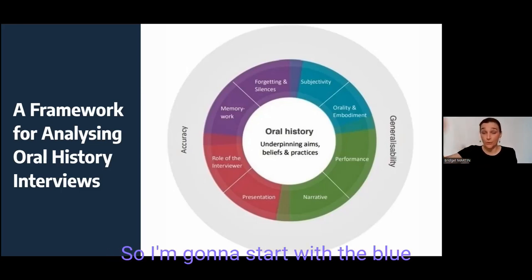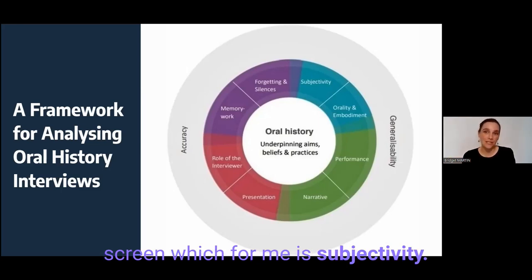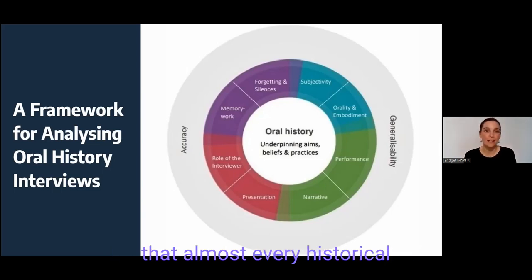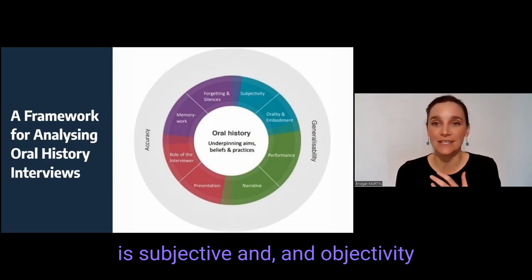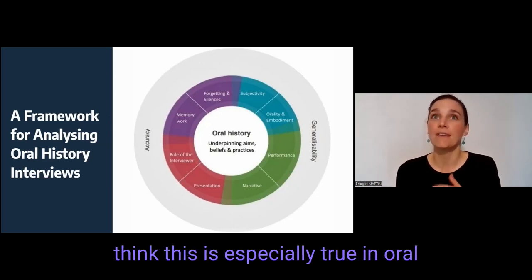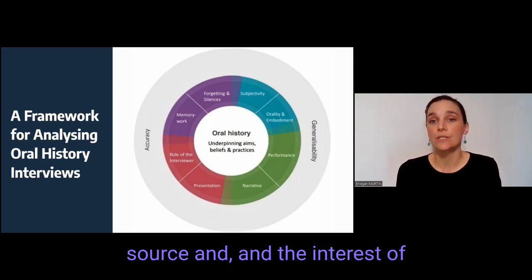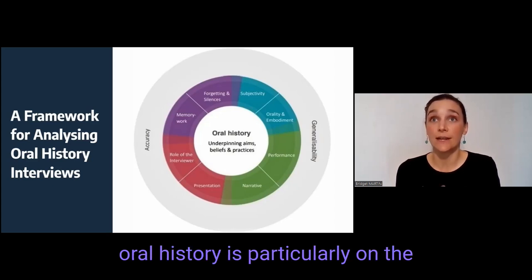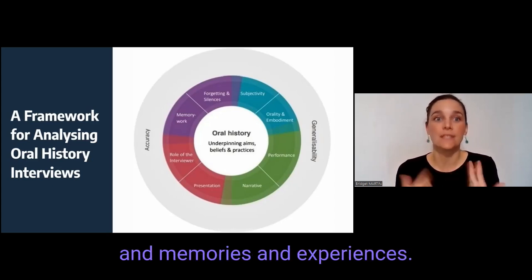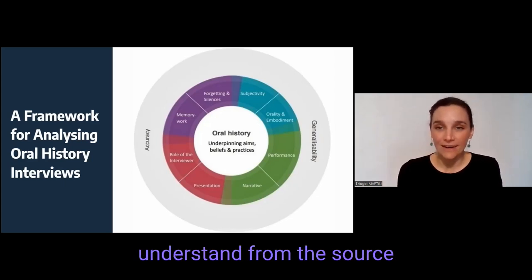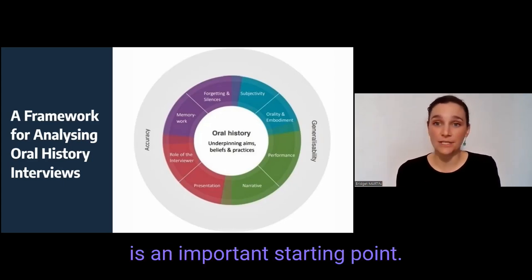I'm going to start with the blue on the top right side of the screen, which for me is subjectivity. We could absolutely suggest that almost every historical source is subjective and objectivity is very difficult to come by, but I think this is especially true in oral history, where it is a very personal source and the interest of oral history is particularly on the individual person's perspectives, memories, and experiences. Thinking about how that influences what we can understand from the source is an important starting point.